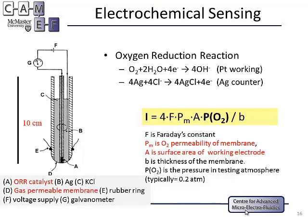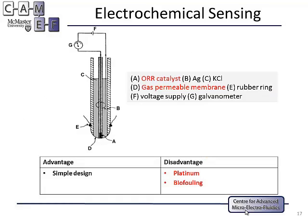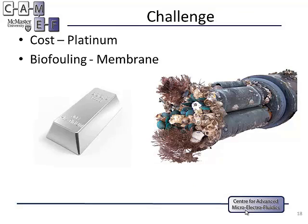The third one is the electrochemical sensor. It has a platinum working electrode, a silver/silver-chloride reference electrode, and a gas-permeable membrane underneath to prevent interference from contacting the working electrode. When dissolved oxygen enters, it contacts the platinum, which acts as a catalyst to trigger the oxygen reduction reaction, producing a current. The dissolved oxygen concentration is calculated from that current. This method is the simplest and therefore lowest cost among the three. However, because platinum is used as the catalyst, the cost is still somewhat high, and biofouling may occur on the sensor.